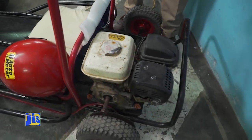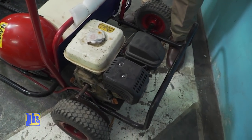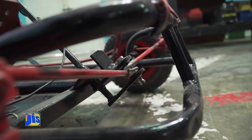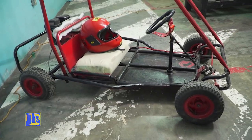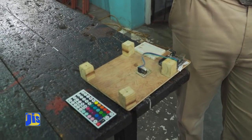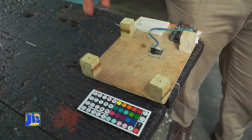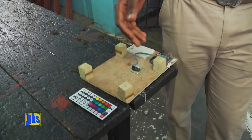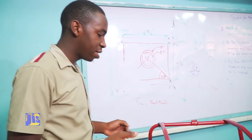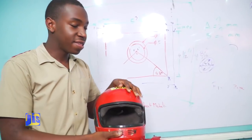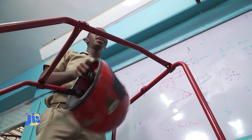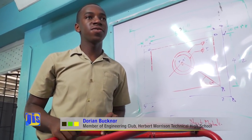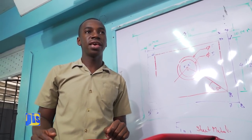Then we have the steering, which steers either left or right. Around here we have the engine — this is a Honda GX 120, 6.5 horsepower engine. This cart is a dead axle go-kart, which means that it is run by only one wheel. Over here we have the remote kill switch, which I programmed myself, which is used to turn off or turn on the cart from a remote distance. The kill switch is more like a safety device. Here you can see we have our helmet, and safety always comes first. The main purpose of this go-kart is to help persons of the Herbert Morrison Technical High School to learn how to drive, so when they leave high school they can have their driver's license.